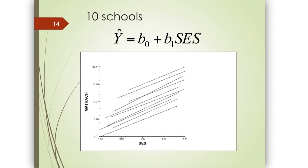This is a sample of 10 different schools where I ran single-level OLS regressions predicting math achievement from SES. First, that relationship is positive — the larger a child's family SES, the higher the predicted math achievement. Across these 10 schools, do the relationships look the same or different? They're different — the intercepts vary quite a bit, and the slopes are not exactly parallel either.